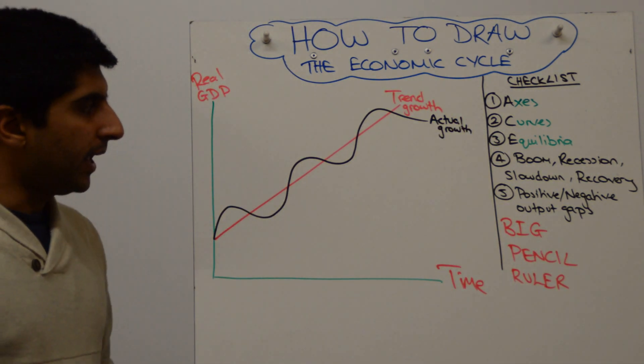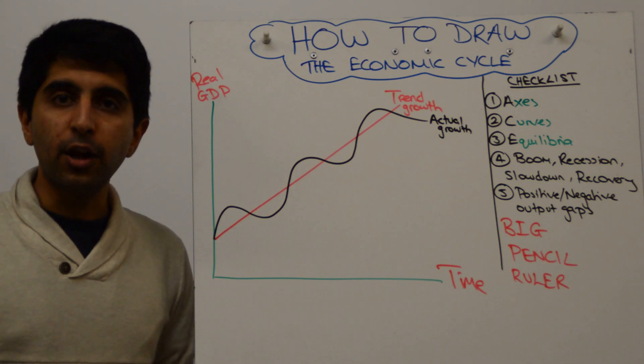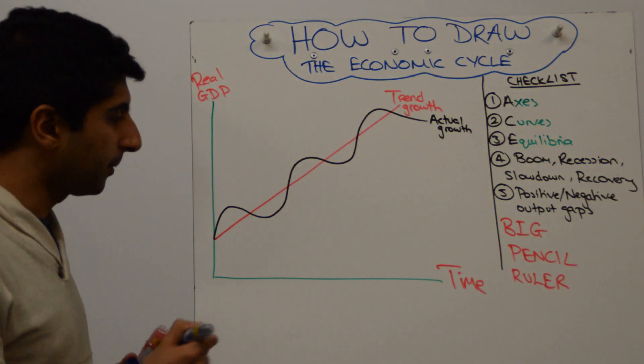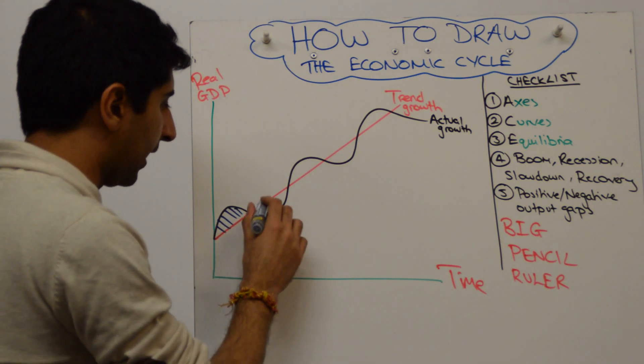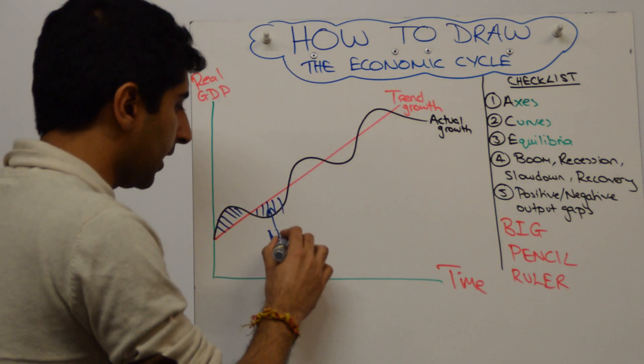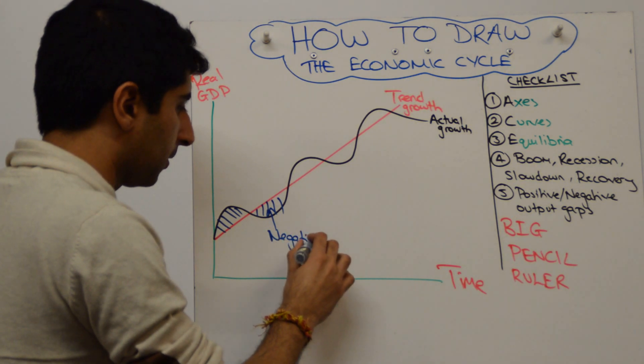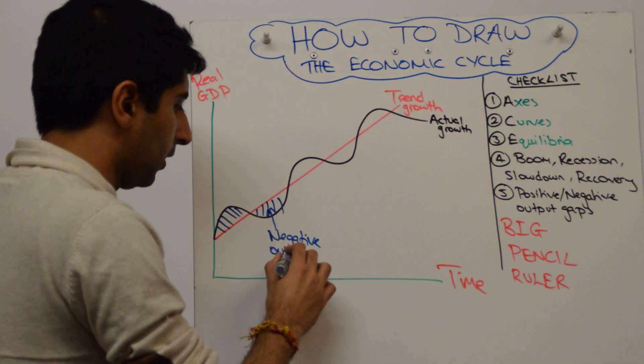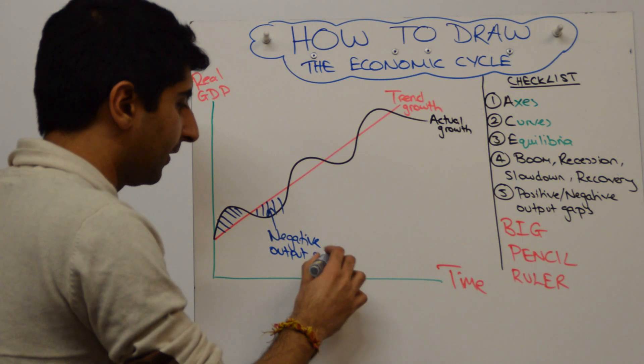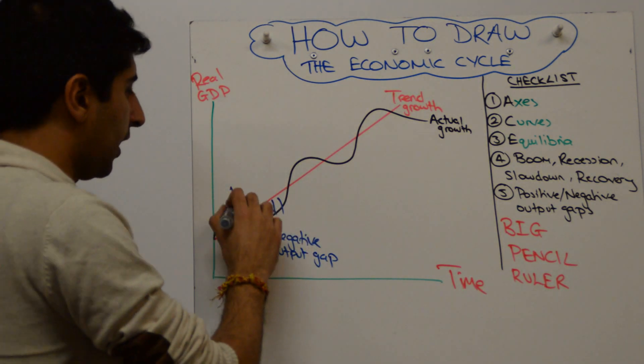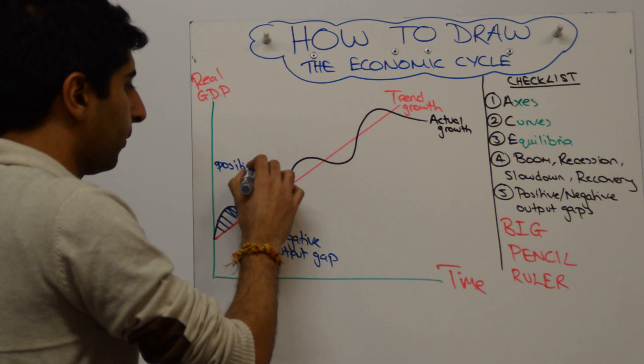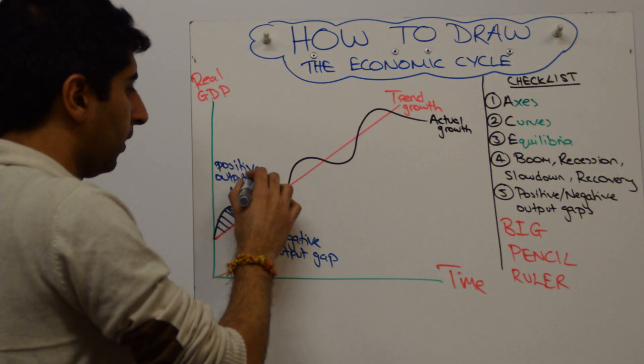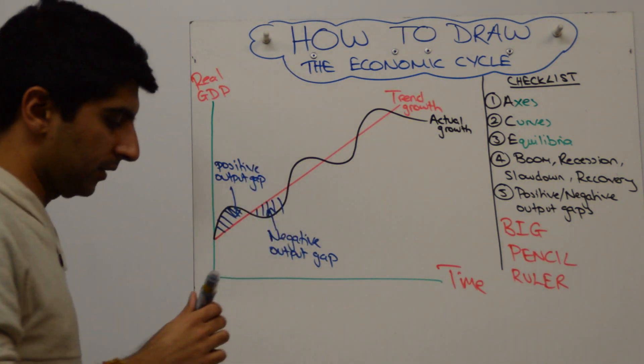Next thing we want to do is to shade in our positive and negative output gaps. So the easiest thing is to shade that one in and to shade that one in. That is a negative output gap where actual growth is less than the trend rate of growth. And where actual growth is greater than the trend rate of growth, we have a positive output gap.